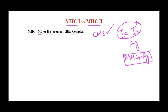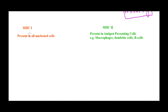In order to provoke cell-mediated immunity, MHC molecules play a very important role in our body. These MHC molecules are actually called human leukocyte antigen (HLA) in our body. Now let's see the major differences between MHC class 1 and MHC class 2. The first difference is where exactly these molecules are present.